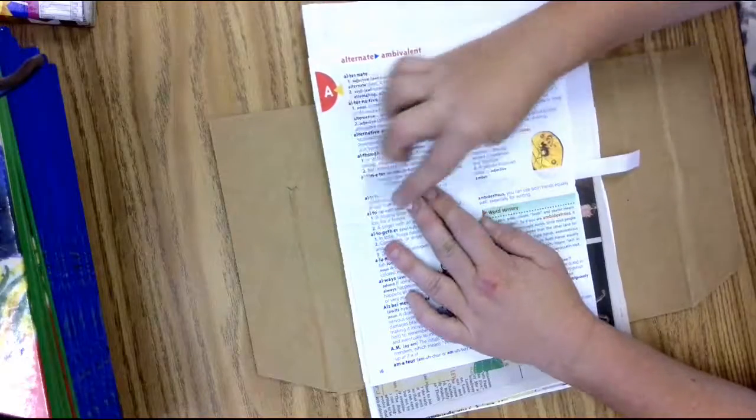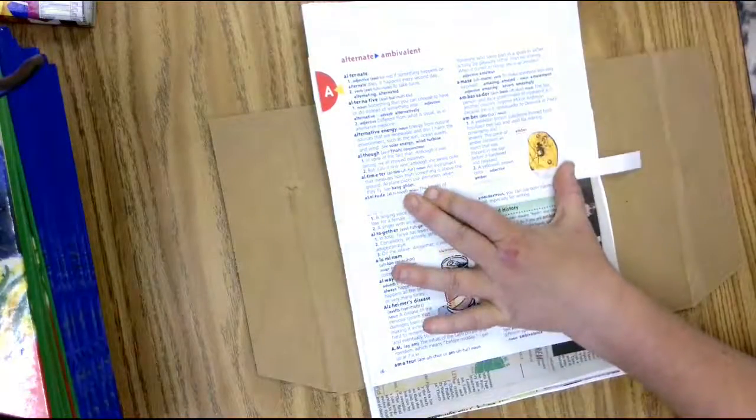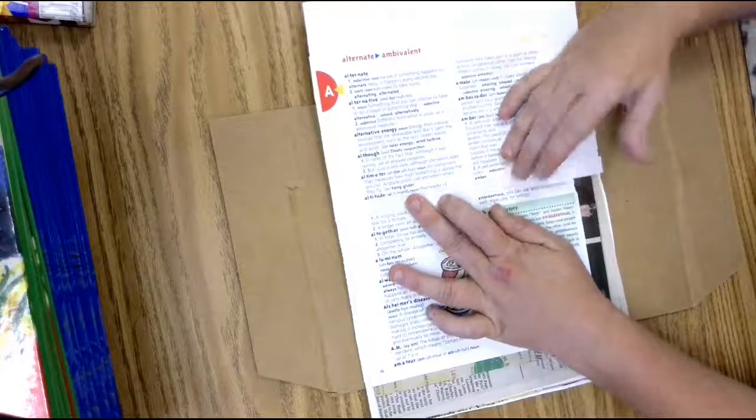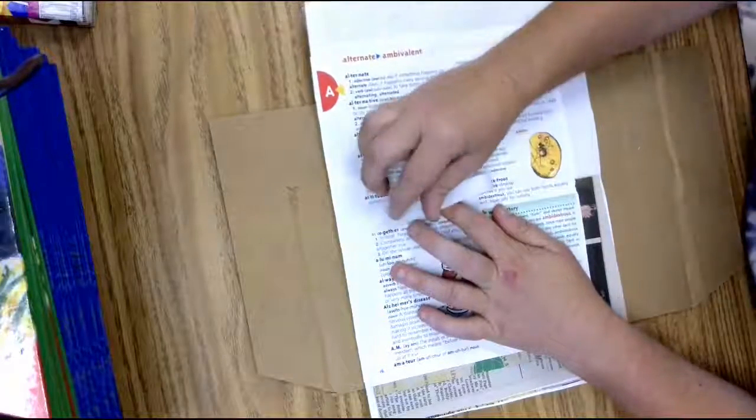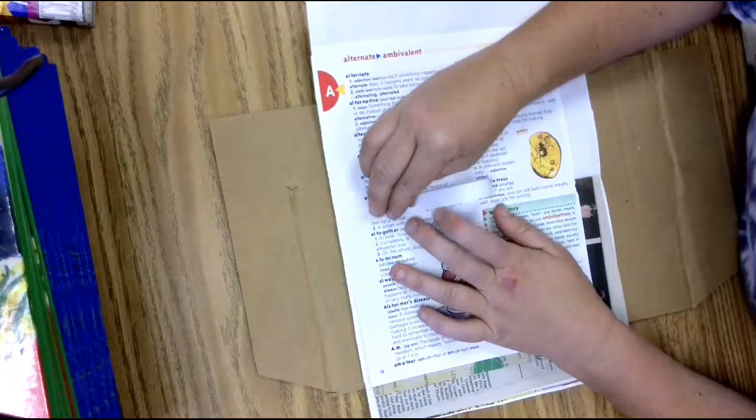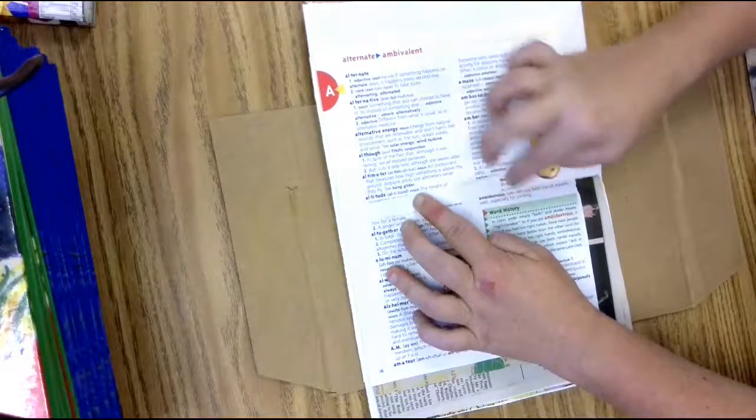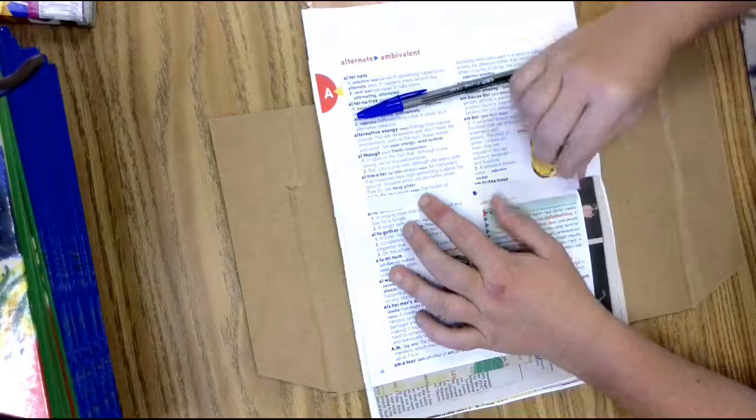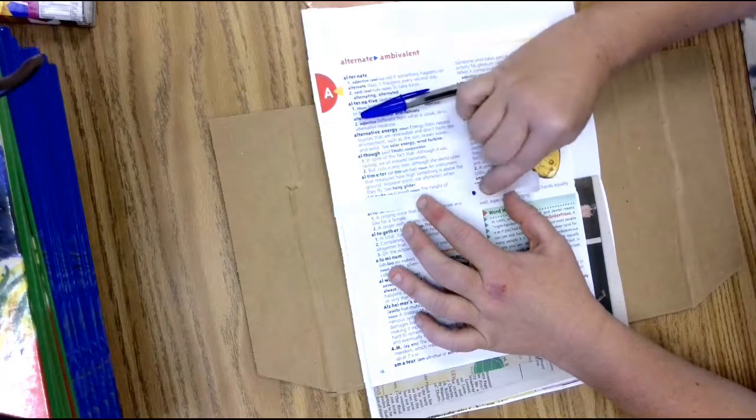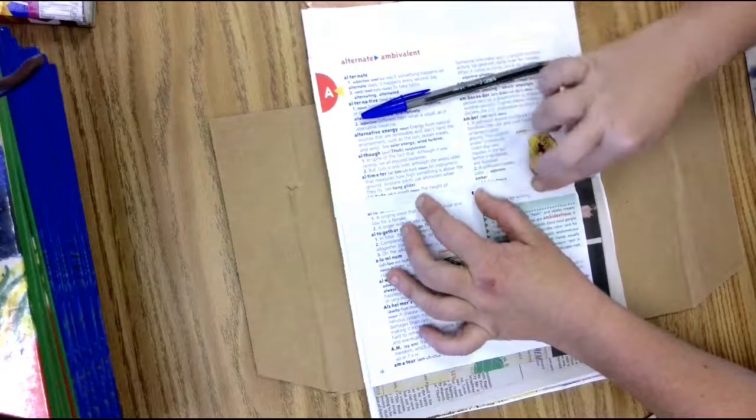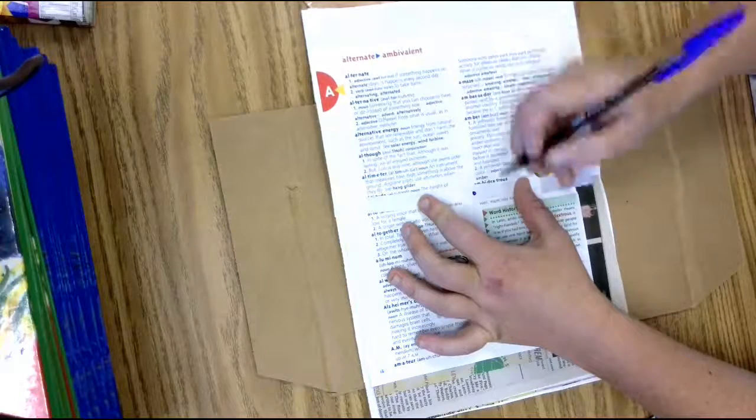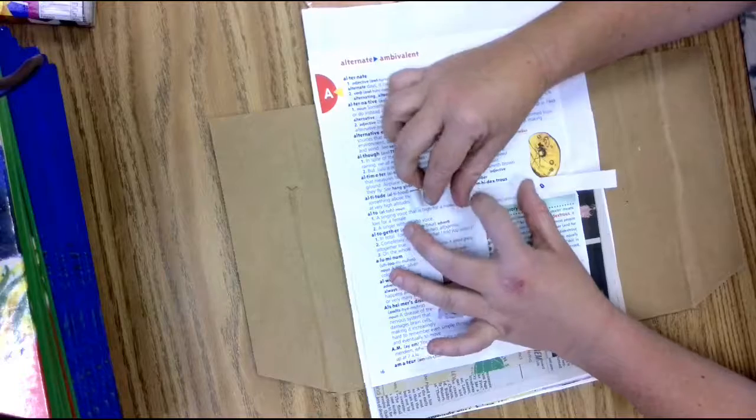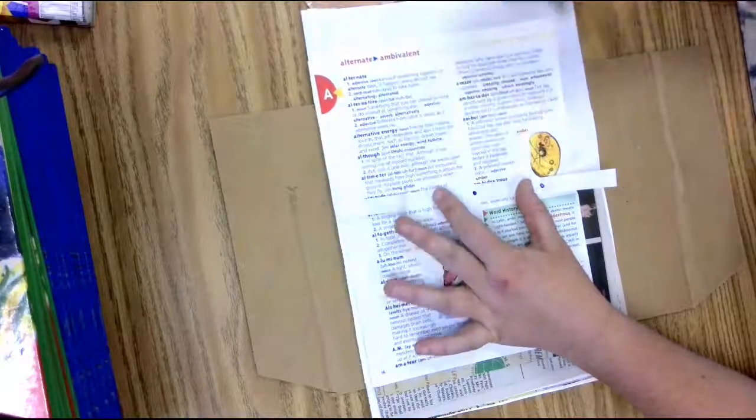First cut it so that it's the same length as your book, and then we're going to use it to make three holes that are equal distance apart. So fold it in half, put a little dot there where the crease is, then bring the bottom up to that dot, crease it, put another little dot there on the crease, and do the same thing. Bring the top down to the center dot, crease it, and put a dot there.